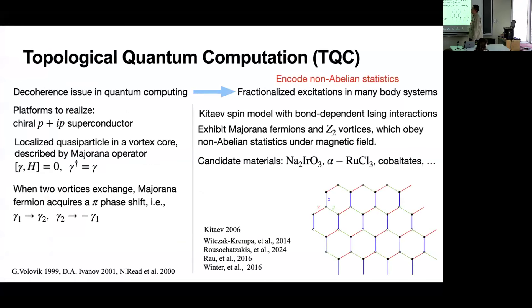First, let me give you an introduction. This work is about topological quantum computation. The idea is that there's a decoherence issue in quantum computing, which is a serious challenge. Topological quantum computation solves this problem by using fractionalized excitations in many-body systems, so quantum information becomes more stable under environmental perturbations.